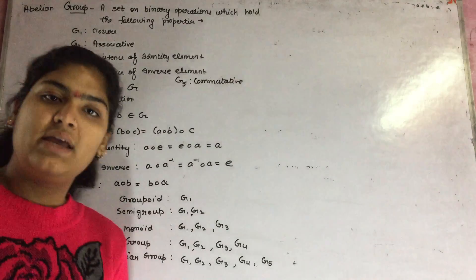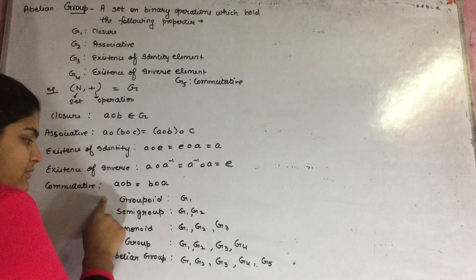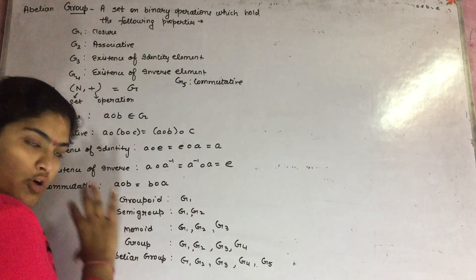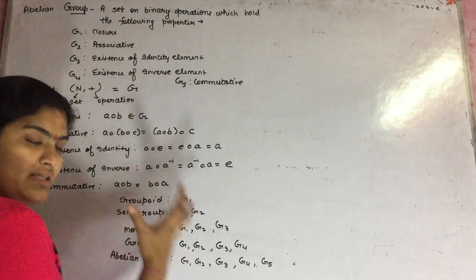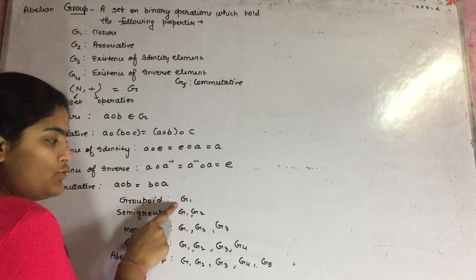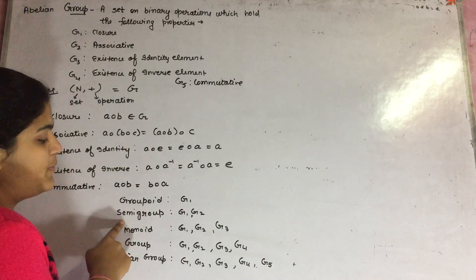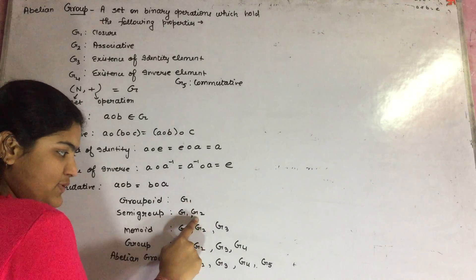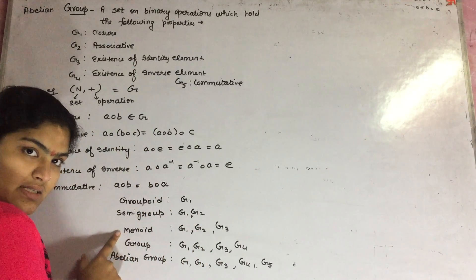Now listen, this is a sequence for different types of groups or a set. A set is said to be a groupoid if it holds closure property. A set is said to be a semi-group if it holds closure property and associativity.